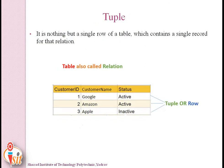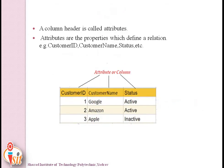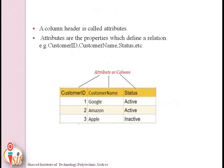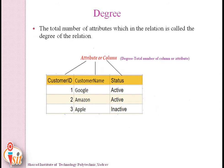A tuple is a single row of a table which contains a single record for that relation. The term related to tuple is cardinality — the total number of rows present in the table. Here the cardinality is 3. An attribute is a column header; customer ID, customer name, and status are attributes. Attributes are properties which define a relation. The term related to attribute is degree — the total number of attributes in the relation. Here the degree is 3.